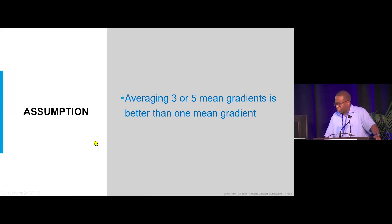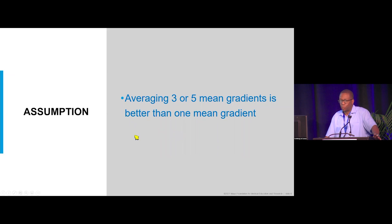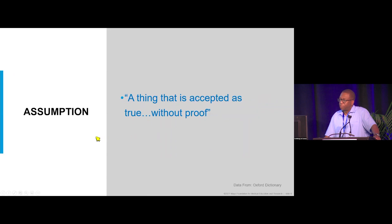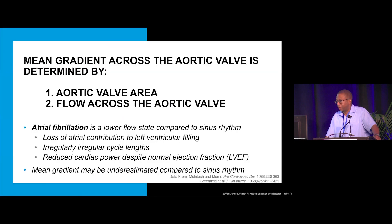This averaging approach is based on an assumption — defined as something accepted as true without proof. There is rationale to average for other conditions, but there is no direct evidence that averaging beats is better for patients with aortic valve stenosis than taking the single highest or lowest gradient.